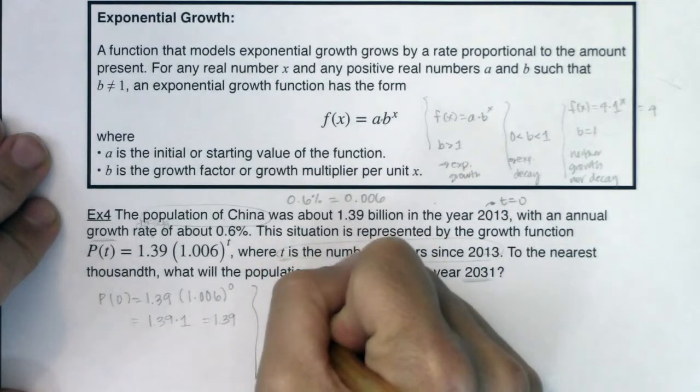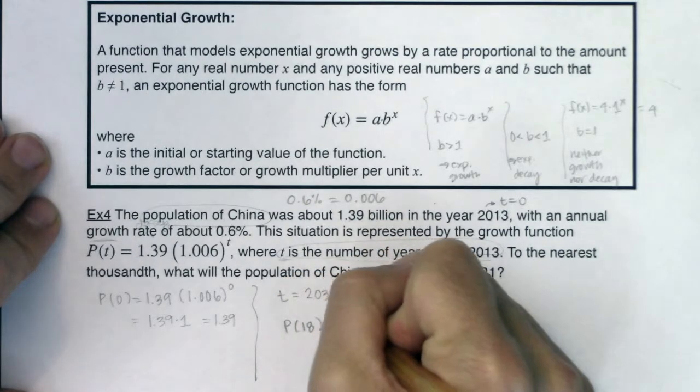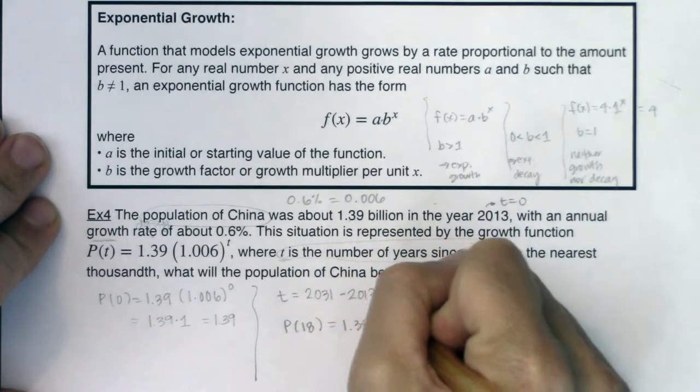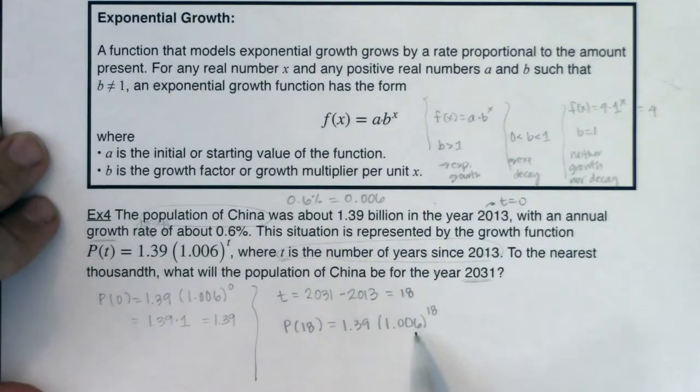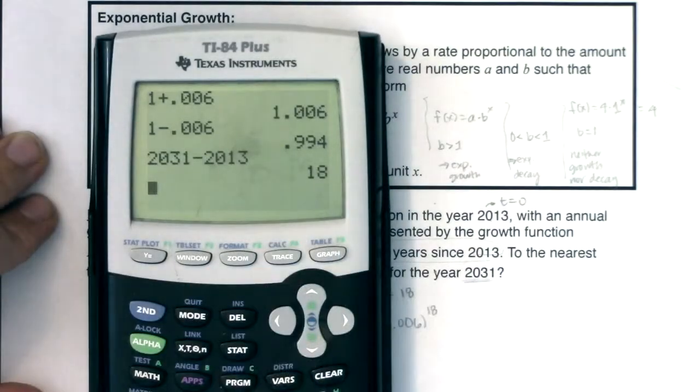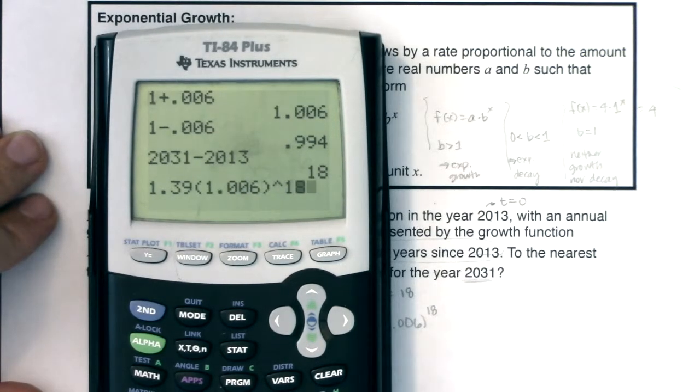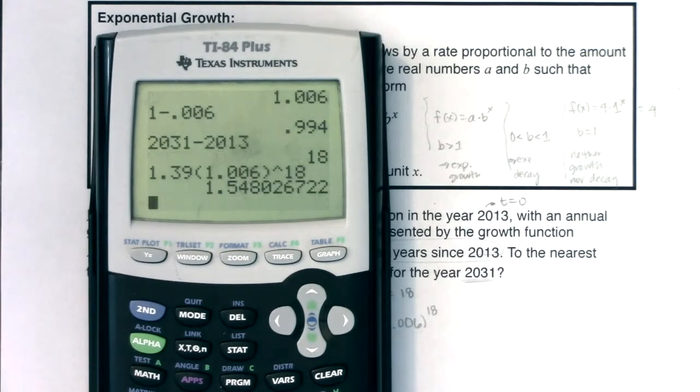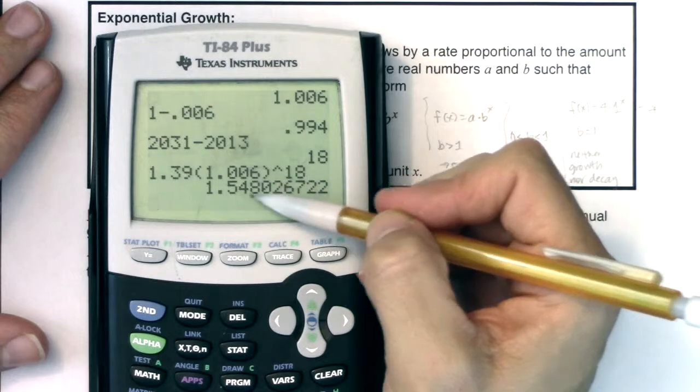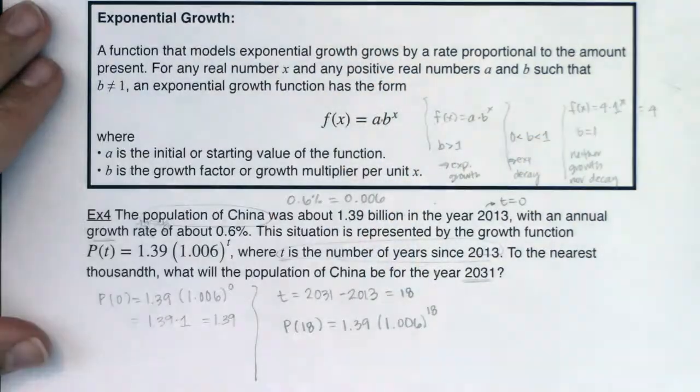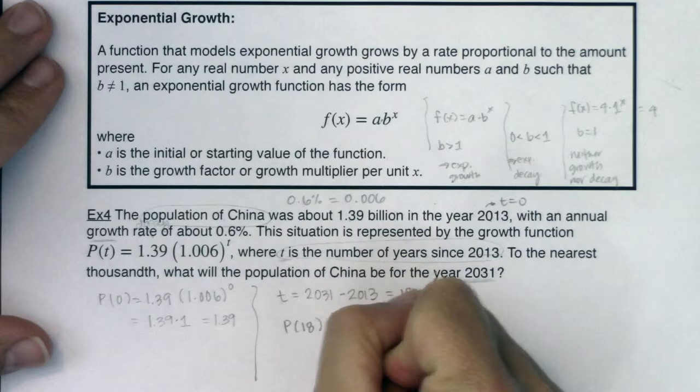And then I'm going to say, well, what is P of 18? That's going to be my initial value times my growth rate raised to the 18th power. Because I'm gaining about 0.6% of my population per year. I have a growth rate. So let's see what that number is. So we're going to do 1.39 times 1.006 raised to the 18th power. And when I push enter, I've got 1.548. They asked me to go to the thousandth place. So that's going to be the 1.548. So my answer here is 1.548.